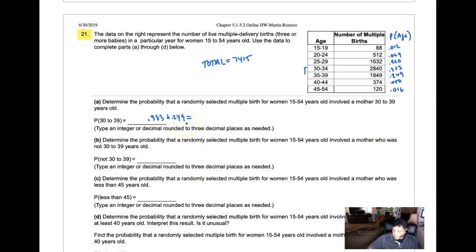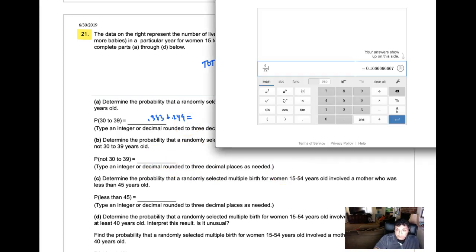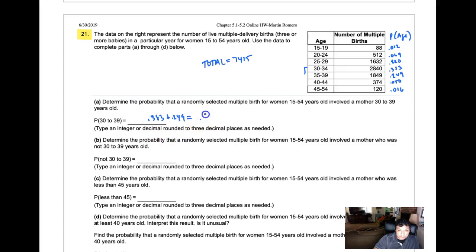You just add those two probabilities together: 0.383 plus 0.249 equals 0.632, which is a 63% chance.